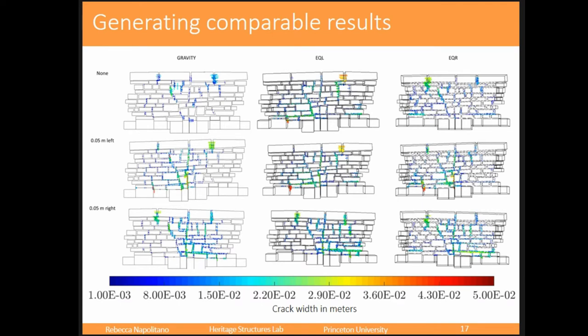I didn't put up all 30 plots because you wouldn't have gotten anything out of it, so I just picked a few favorites: the gravity load, two of the settlement cases, and the earthquake loads. Under all these different loading conditions, we are seeing completely different cracking patterns. And it's important — if it's an earthquake load, it's not something that's continuously happening, it already happened and you can fix it. But if it's settlement, you'll have to address that differently in preservation plans.